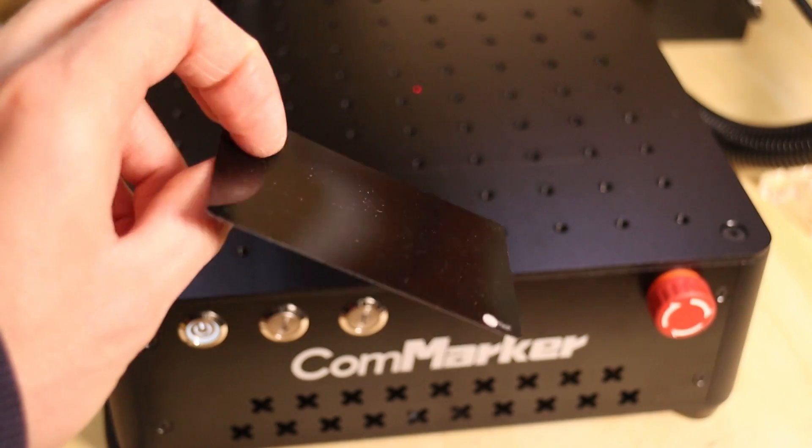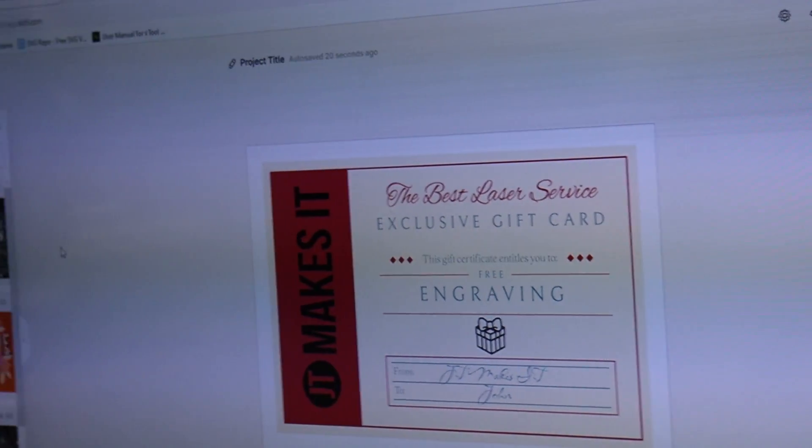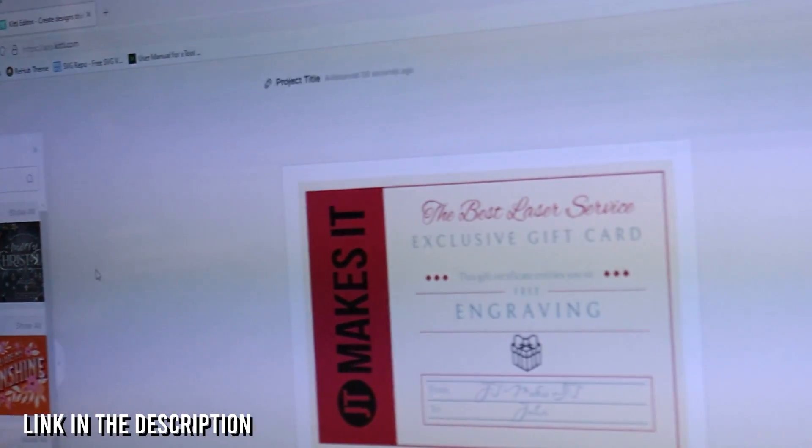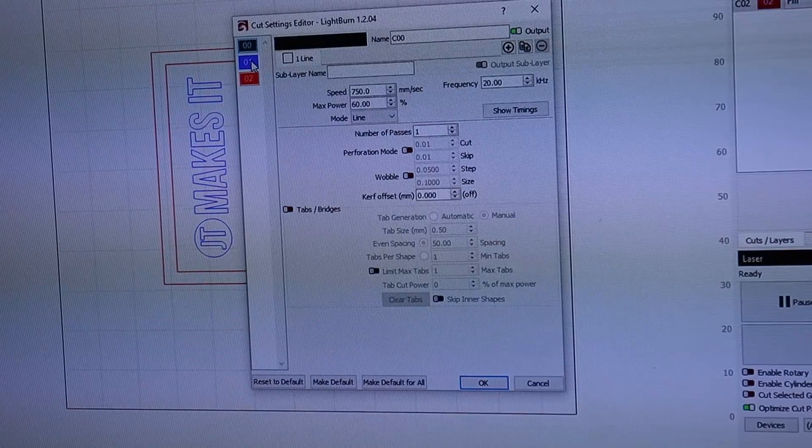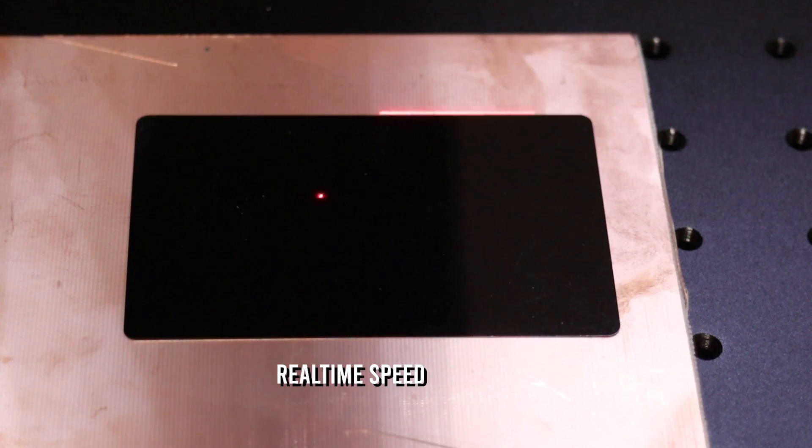Galvo lasers don't have moving parts and because of that, they are approximately 100 times faster than a normal laser. Let's engrave a simple design I made with Kittle to show you how fast it can really engrave. This laser is lightning fast. This video is playing at real-time speed.